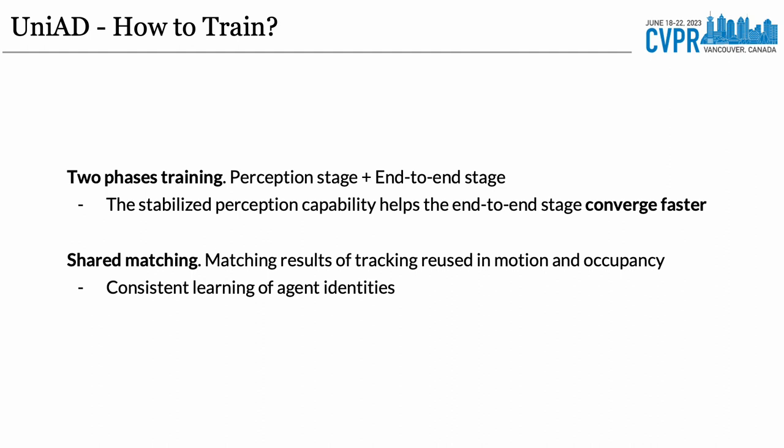UniAD is trained in two phases. Firstly, the perception modules are trained for six epochs, establishing stable perception capabilities. Then all task modules are collectively trained for another 20 epochs. To consistently learn the agent identities, the matching results of tracking are reused in the motion and occupancy nodes, which greatly speeds up the convergence of the second phase.